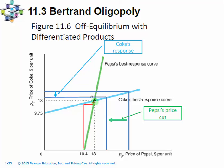Remember, our assumption is that the marginal cost is just $5. So when we have these differentiated products in the price competition for the Bertrand model, the price can be higher than the marginal cost, which is more realistic. If we think about the price war dynamics: if Pepsi sets its price at $10.40, then Coke will set somewhere between $9.75 and $13. Then Pepsi will see that price and increase its price a bit, as will Coke in response. So the price eventually moves to $13 for both firms.